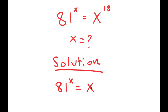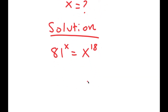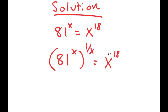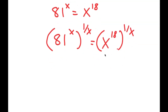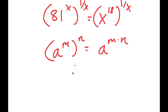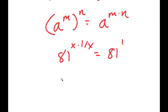So 81 to the power of x is equal to x to the power of 18. Now I'm going to take the power of 1 over x on both sides. So I get 81 to the power of x to the power of 1 over x is equal to x to the power of 18 to the power of 1 over x. Since a to the power of m to the power of n equals a to the power of m times n, 81 to the power of x times 1 over x equals 81 to the power of 1, which is just 81.